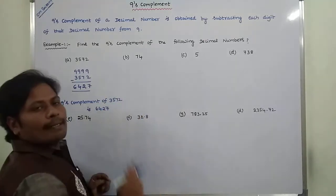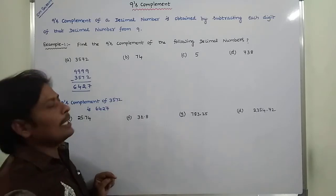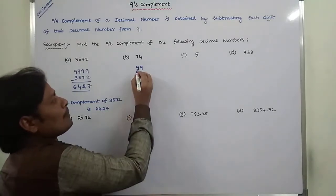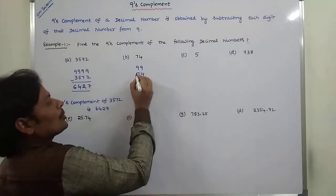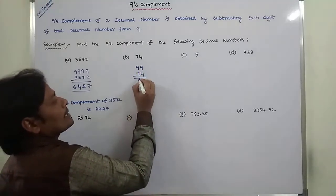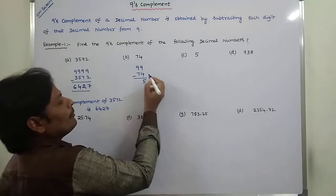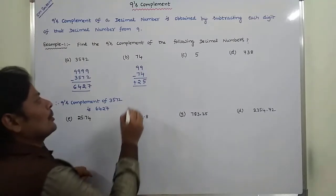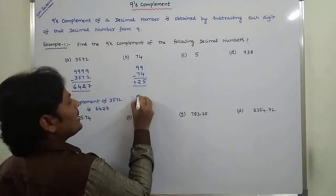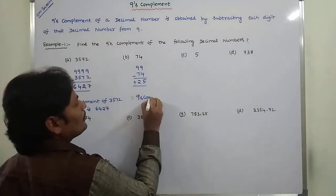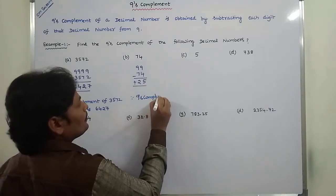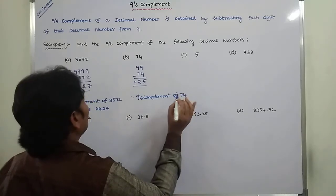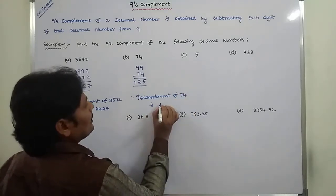Next, second problem. How many digits are there? Two digits are there. Each and every digit can be subtracted from 9. 9 minus 7 is 2, 9 minus 4 is 5. So that is 25. Therefore, the 9's complement of 74 is 25.